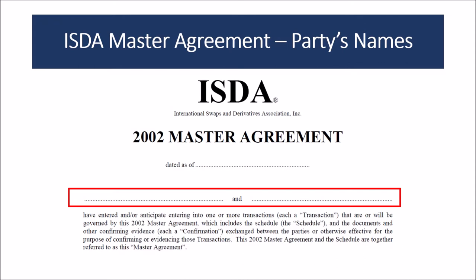There may be instances where transactions are performed before entering into the master agreement. The confirmation usually refers to the intention of the master agreement intended to be executed. In this scenario, the master agreement is deemed to be in existence without a schedule — the basic essential elections are enough to allow the master agreement to function as a governing and legal document. These elections may be minimal, such as choice of law and the termination currency.